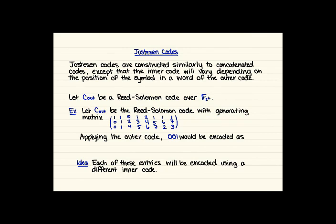So we're going to use these primitive elements to construct something called Justesen codes. Justesen codes are constructed similarly to how we constructed concatenated codes last time, except that now the inner code is going to vary depending on the position of the symbol in a word of the outer code. So remember with concatenated codes, for example, we were looking at a Reed-Solomon code as our outer code, and then we had a way of encoding elements in F8 into binary. So the idea with Justesen codes is depending on the position in the vector, they might be encoded a little bit differently.